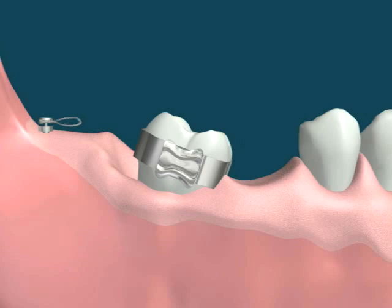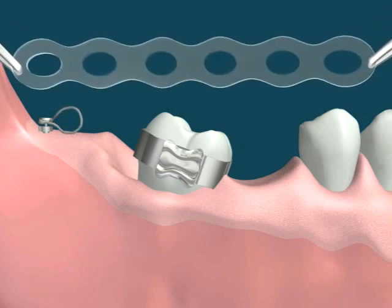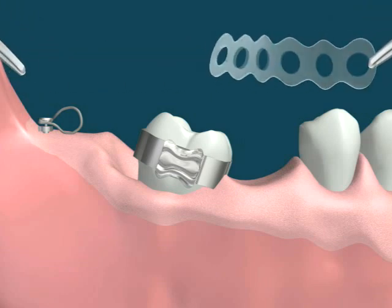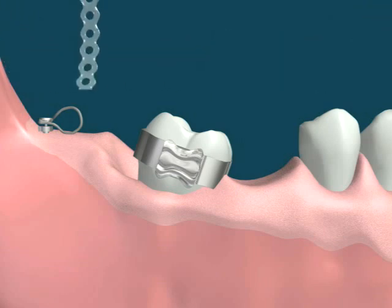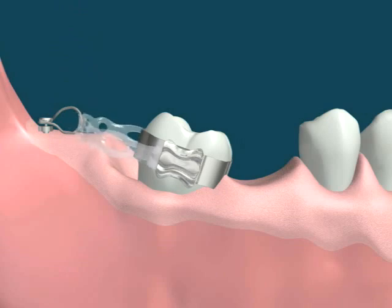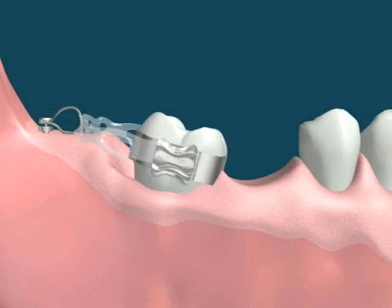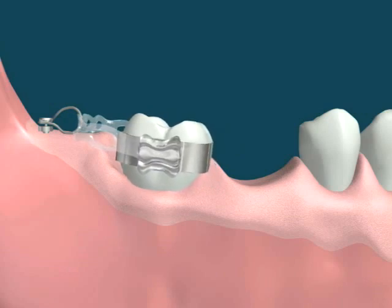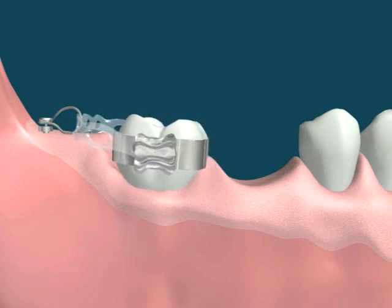A ligature type of attachment is placed on the implant so it can be connected to the initiation device. A special elastic device is used as the initiation device. It will place a distal force on the reclined tooth, and ultimately the tooth moves to the desired position.